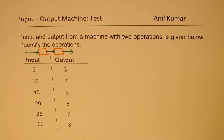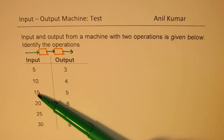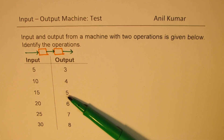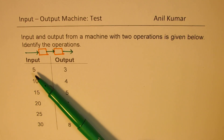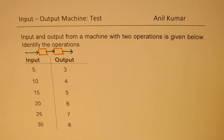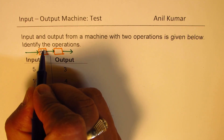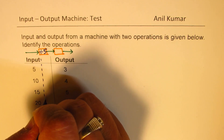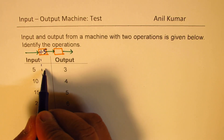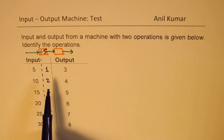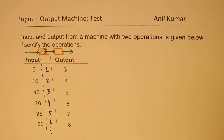Let's look at the inputs: 5, 10, 15, 20, 25, 30 — they go up by 5 and are all multiples of 5. The outputs are 3, 4, 5, 6, 7, 8. Since the outputs are much lower, in the first step we could divide by 5. If I divide by 5 and make a column, I get 1, 2, 3, 4, 5, 6.